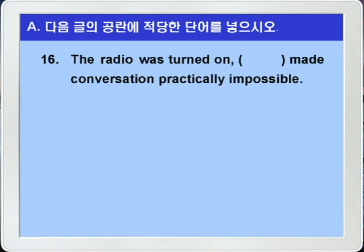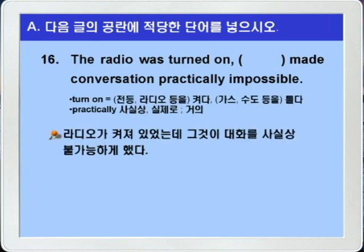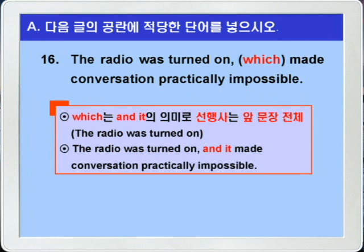16번입니다. 'The radio was turned on blank made conversation practically impossible.' turn on하면 전등이나 라디오 등을 켜다라는 뜻이죠. 'The radio was turned on', 라디오가 켜져 있었는데, 'blank made conversation practically impossible', 그것이 대화를 사실상 불가능하게 만들었다, 이런 의미의 문장이 되겠습니다. 따라서 블랭크에는 앞 문장 전체를 선행사로 받을 수 있는 계속적 용법의 관계대명사 which가 들어가면 되겠습니다. 이때 which는 'and it'의 의미죠.